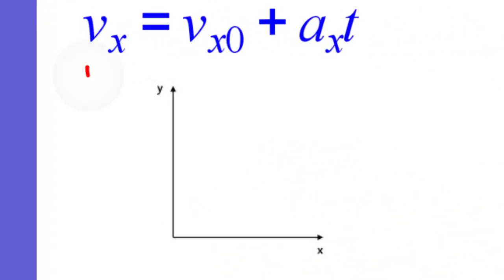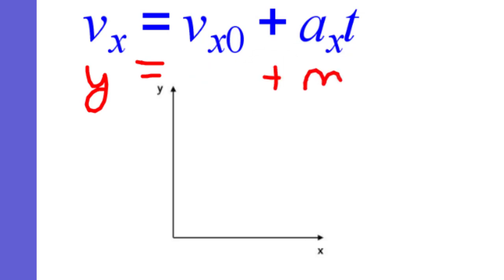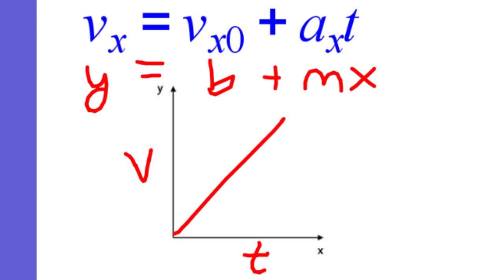For the first equation, if we think of this as y equals mx plus b, our slope is going to be the acceleration, and our x-axis is going to be time, with initial velocity as the y-intercept. So on the x-axis we put time, on the y-axis we put velocity, and the linear slope is equal to the acceleration.